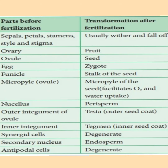The sepals, petals, stamens, style, and stigma are present before fertilization, and after fertilization these parts wither and fall off. The ovary present before fertilization becomes the fruit; the ovule becomes the seed. The egg fertilizes and forms the zygote, and the funicle forms the stalk of the seed.